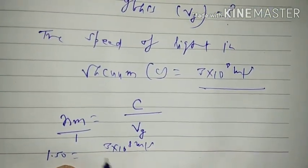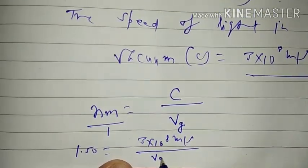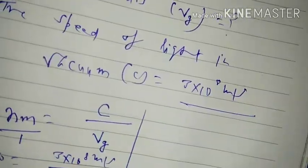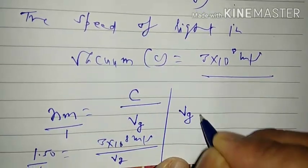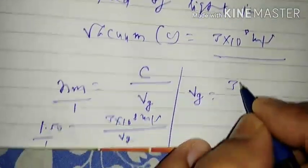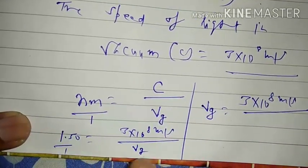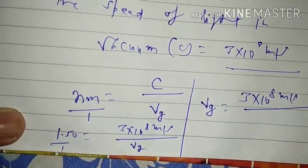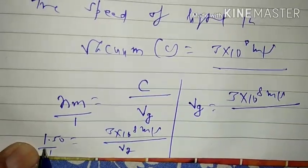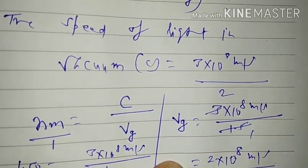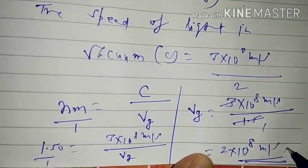So: 1.50 = (3 × 10⁸ m/s) / VG. By cross multiplication: VG = (3 × 10⁸ m/s) / 1.5. Dividing gives VG = 2 × 10⁸ m/s. Therefore, the speed of light in glass is 2 × 10⁸ m/s.